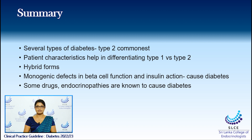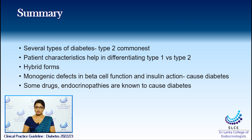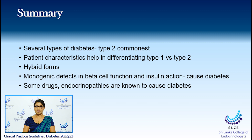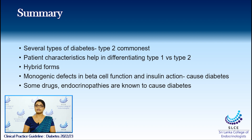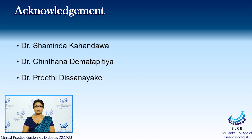Finally, in summary, there are several types of diabetes recognized in current medical practice, with type 2 being the commonest type. Patient characteristics will help clinicians identify type 1 and type 2 diabetes. There are two hybrid forms of diabetes, and rare monogenic types carrying defects in beta cell function as well as insulin action. Certain medications as well as endocrinopathies can also cause diabetes.